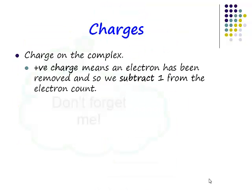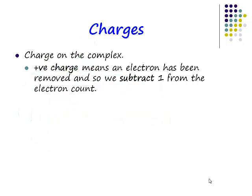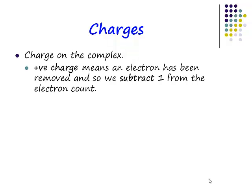Let's never forget the charge on our complex. We must remember that if our complexes are charged, that's affecting the number of electrons. If something is positively charged, you've removed electrons. Electrons are negatively charged, so if something is cationic, we need to subtract. If something has a charge of plus one, we subtract one from the electron count. If something has a charge of minus one, we add one to the electron count.